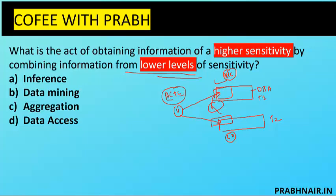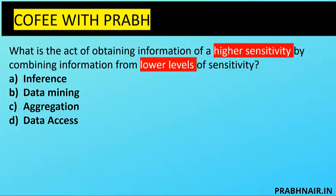This concept is called aggregation. We have four options: inference, which is a control used to create two different versions of the same information to disguise unauthorized users. Mining is just extracting data, but the question says 'obtaining by combining,' meaning mining already happened. Data access is direct access, so it doesn't map. That leaves aggregation as the answer — aggregation means collecting information from multiple sources without performing any analysis.